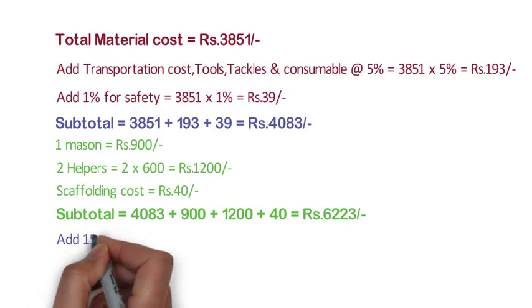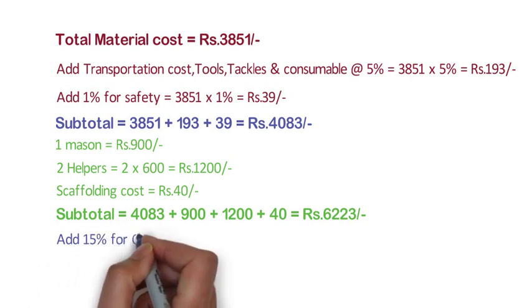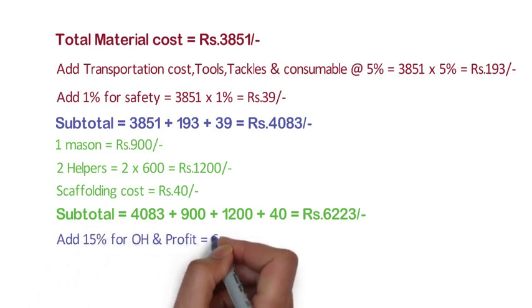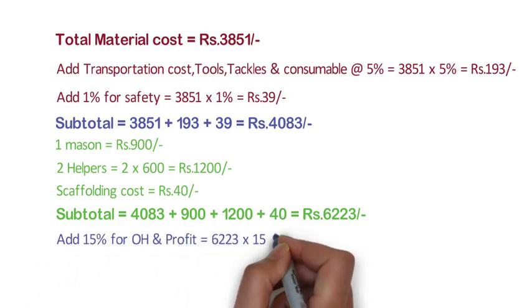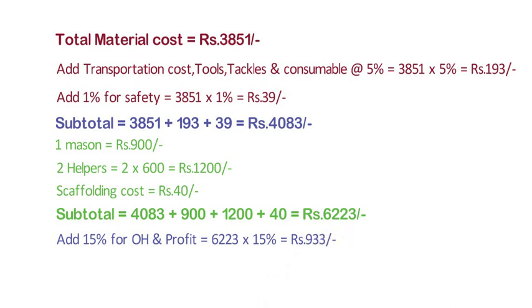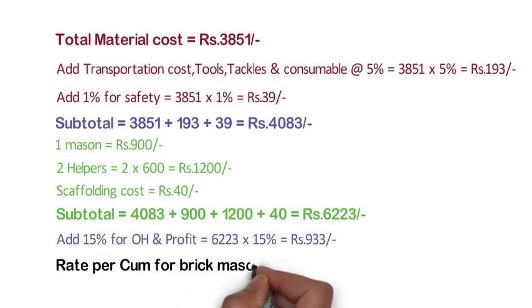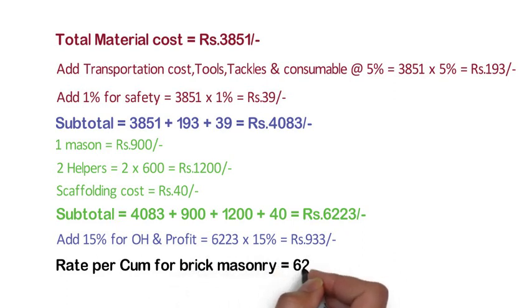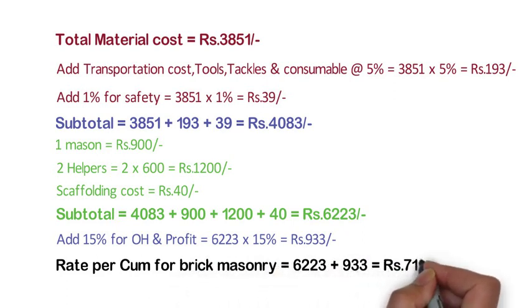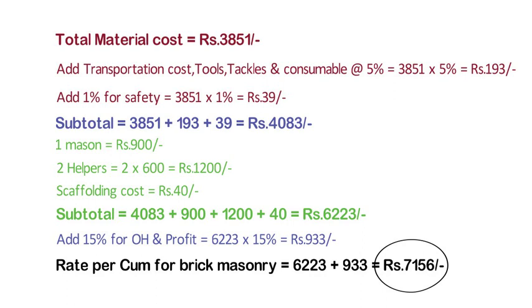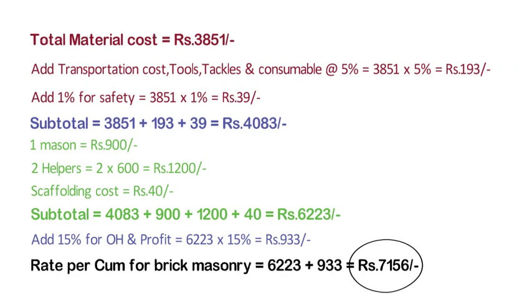Now add 15% for overhead and profit, that is 6223 x 15% is equal to 933 rupees. Now the rate per cubic meter for brick masonry is 6223 plus 933 is equal to 7156 rupees. So for 1 cubic meter of brick masonry, 7156 rupees are required.